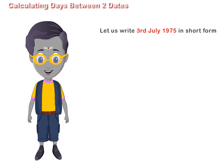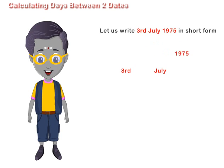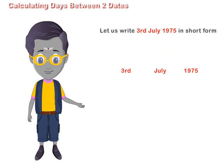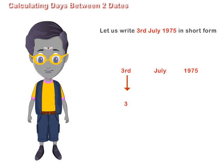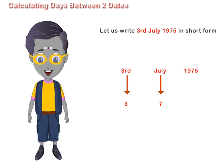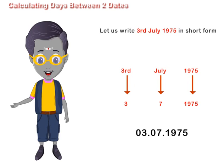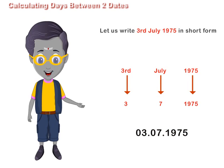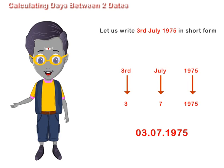Let us write 3rd July 1975 in short form. July is the 7th month of the year, so the short form of 3rd July 1975 is written as 3-7-1975.